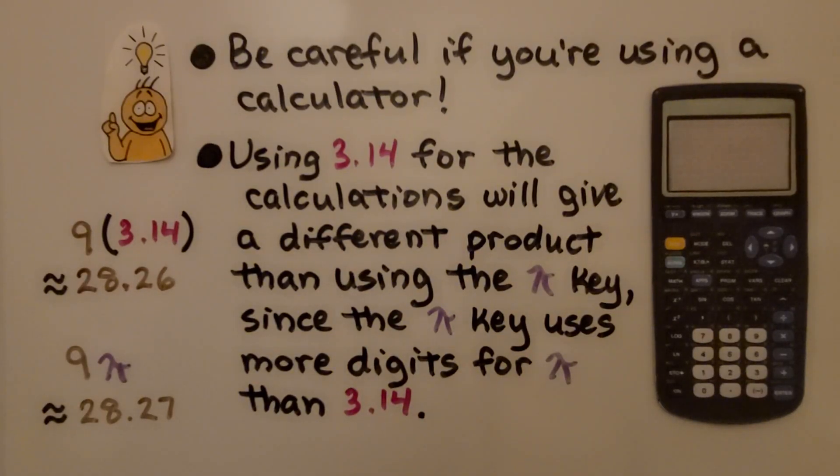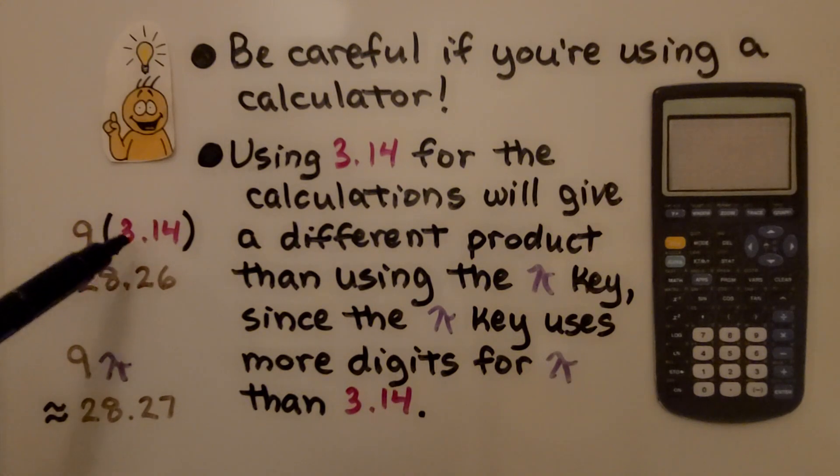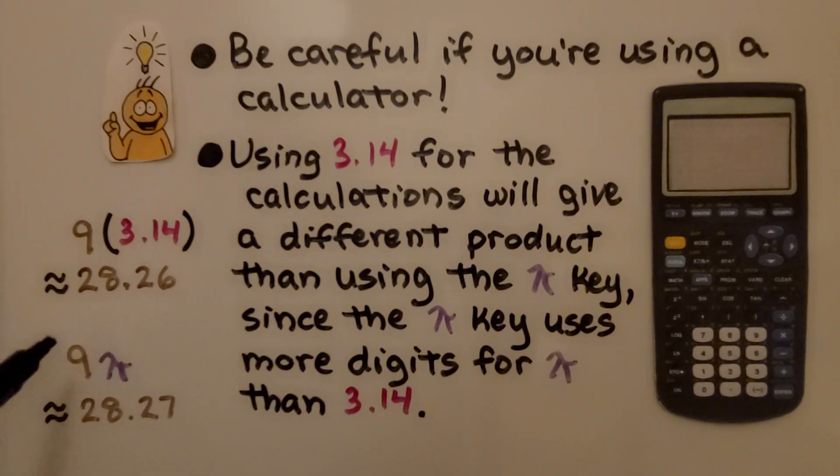Be careful if you're using a calculator. Using 3.14 for the calculations will give us a different product than using the pi key, since the pi key uses more digits for pi than 3.14. If we did 9 times 3.14 for the radius, we would have approximately 28 and 26 hundredths. If we did 9 times pi by pushing the pi key, we would get approximately 28 and 27 hundredths.